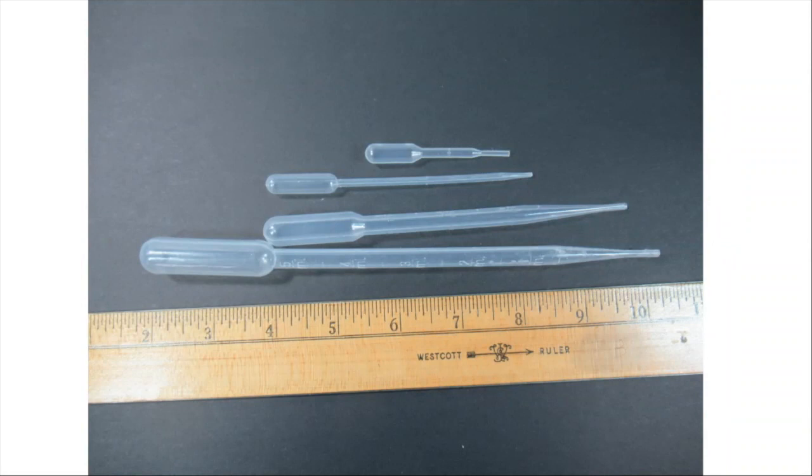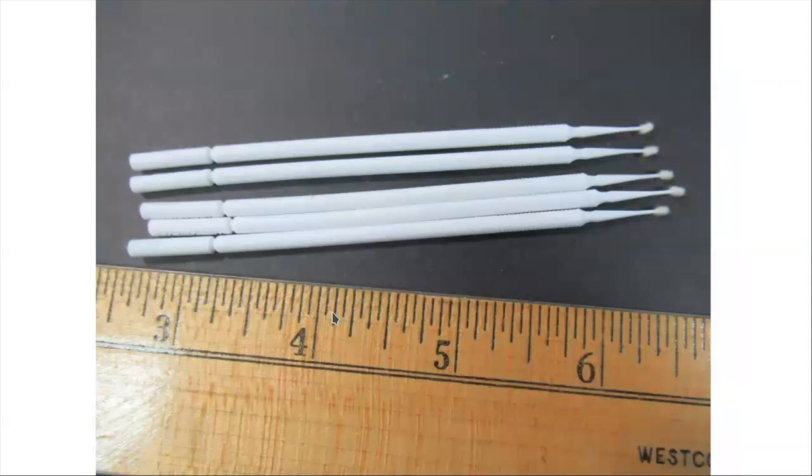To put the glue in the Dappen Dish, you use these disposable pipettes, or they're also called transfer pipettes. There's probably a dozen different sizes and shapes. These come in a range of prices. If you're spending more than a few dollars for 50 or 100, you're paying too much. Microbrushes, buy these through the cosmetics department. You can get a couple hundred of them for $5. They come in several different sizes.